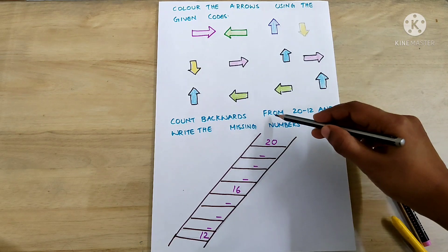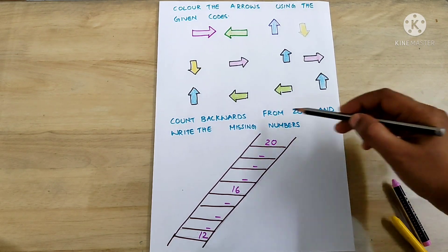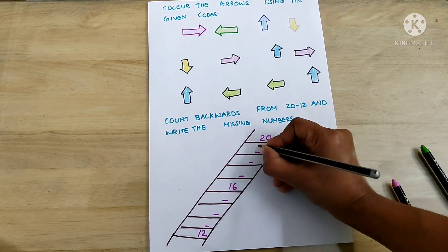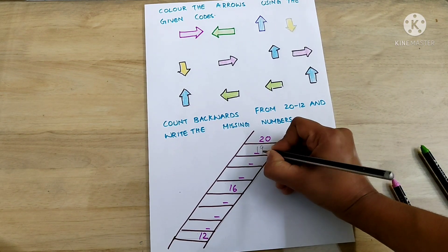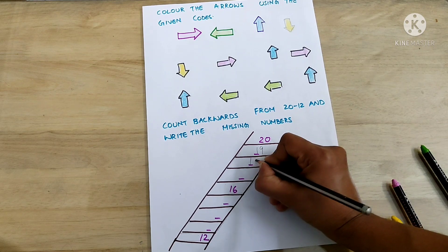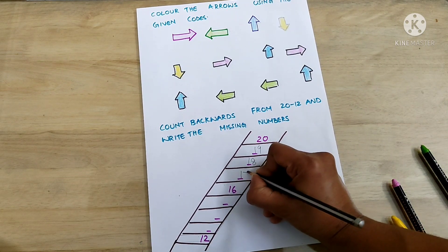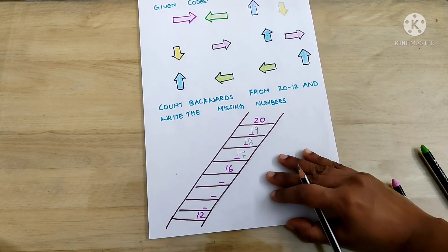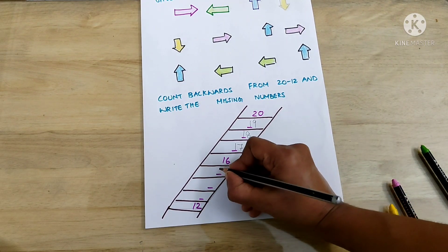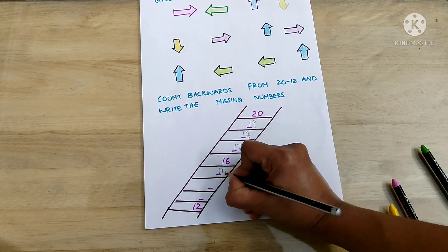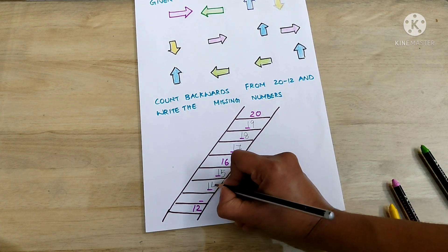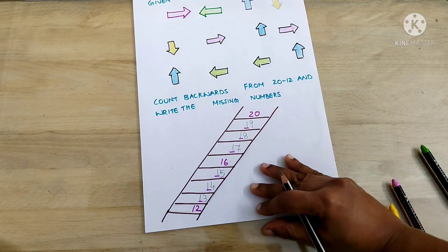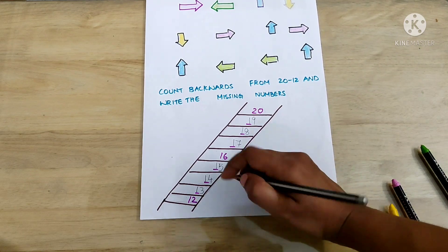Count backwards from 20 to 12 and write the missing numbers. 20, 19, 18, 17, 16, 15, 14, 13, 12.